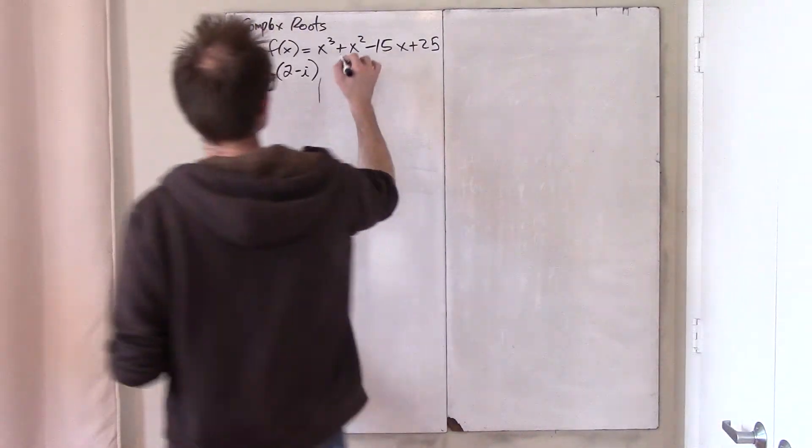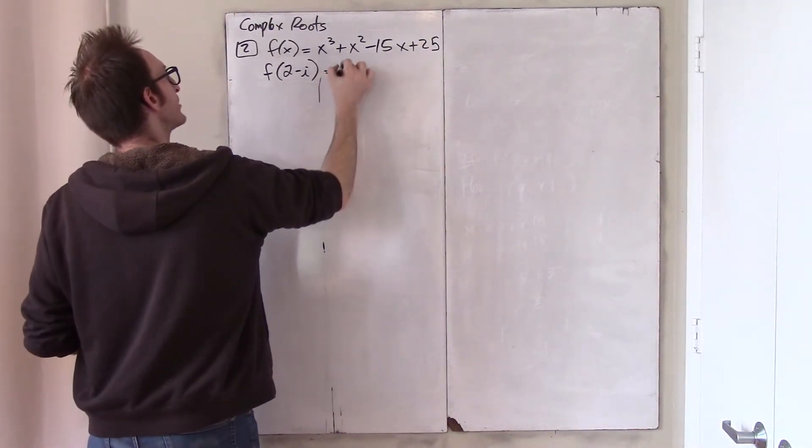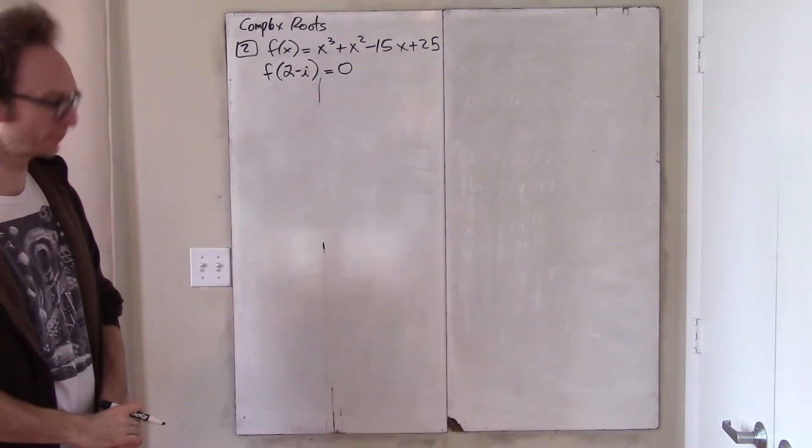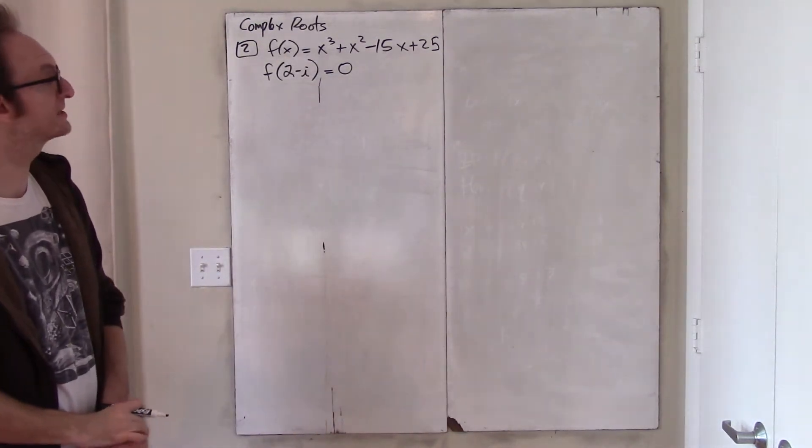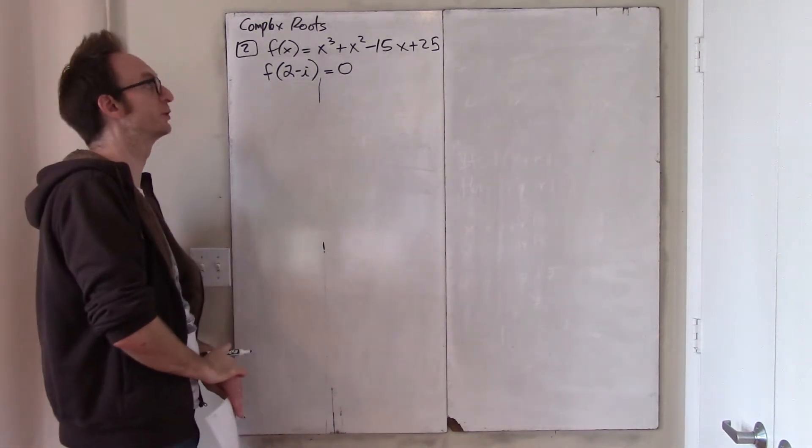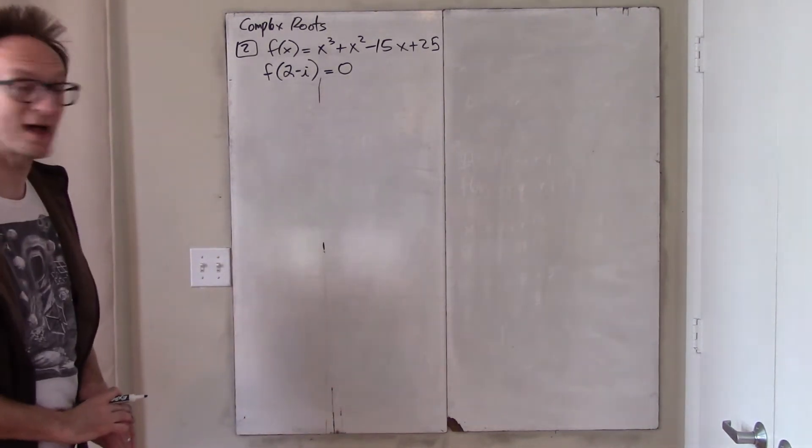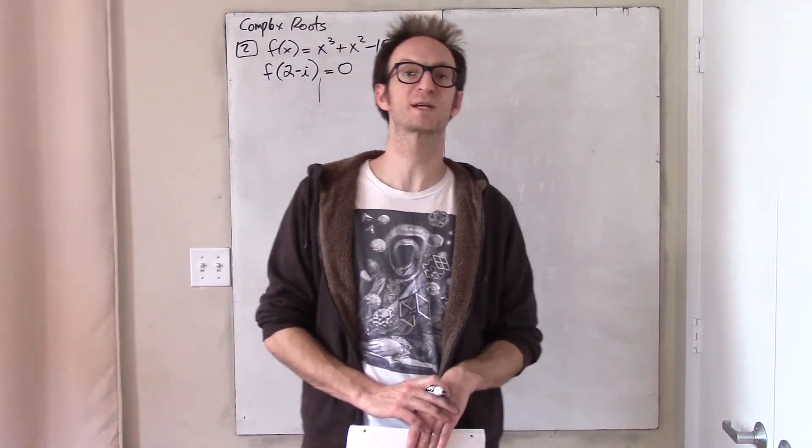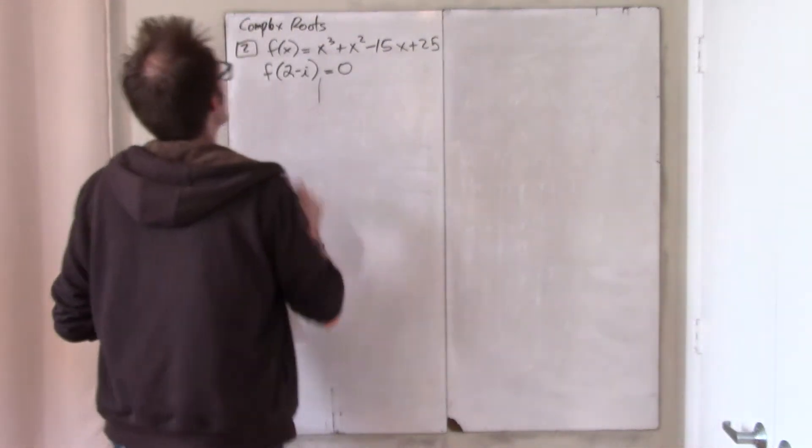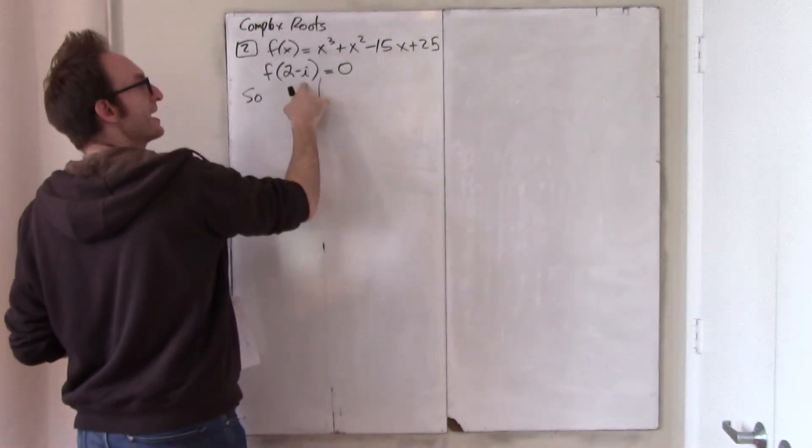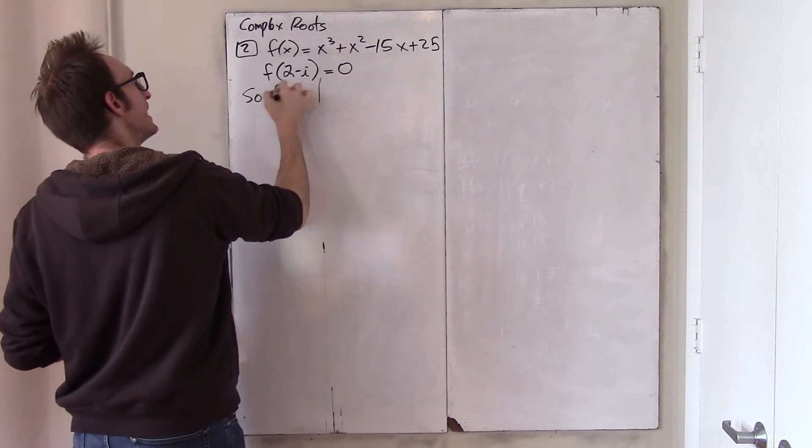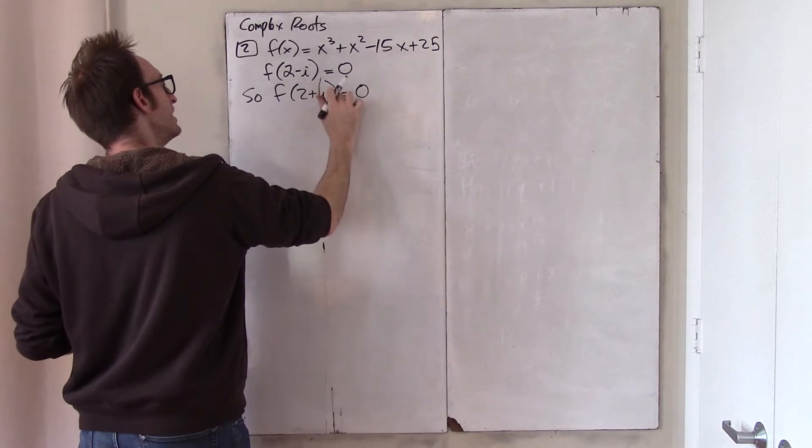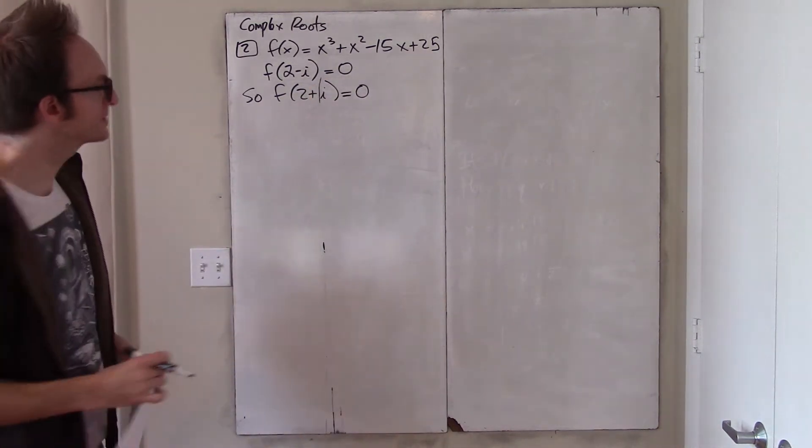So, I am just telling you, secret kind of guardian angel style, that 2 minus i is a root. Okay, and I claim that this is sufficient information to determine the other roots. Why? Well, we just proved in the video that you just watched that complex roots come in conjugate pairs. And so, since 2 minus i is a root, then 2 plus i is a root also. And now, I know two of the three roots.